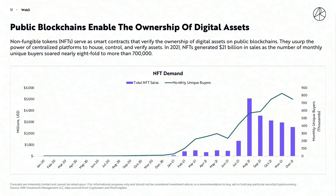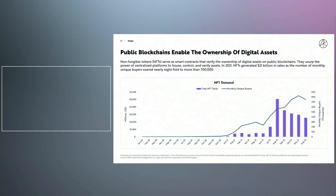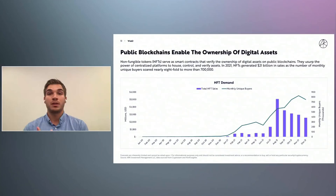For those not familiar with non-fungible tokens, we think they're a great example of a technology built on public blockchains that represent digital ownership and digital verification of that ownership. NFTs can be a wide-ranging use case for many different assets in the digital world — the imagination is kind of the limit here. What non-fungible tokens really are is smart contracts that verify the ownership of digital assets on public blockchains. Not only have we seen a broadening of their use cases in terms of collectibles, art, virtual worlds, and utility, but this has been a momentous year in terms of user growth and number of sales. In 2021, NFTs generated $21 billion in sales and the number of monthly unique buyers soared nearly eightfold to more than 700,000. Still early days, but seeing really strong growth showing that this concept around digital ownership is starting to resonate with internet users.